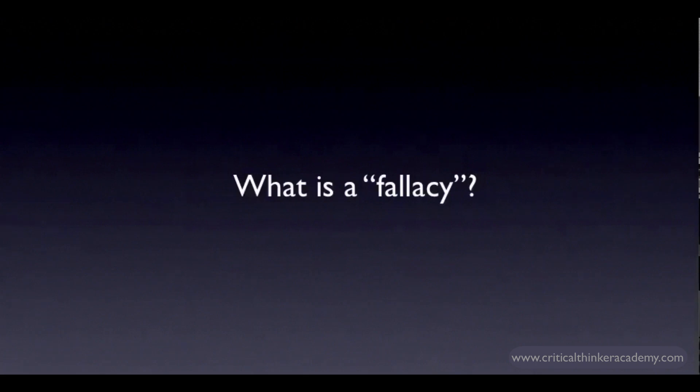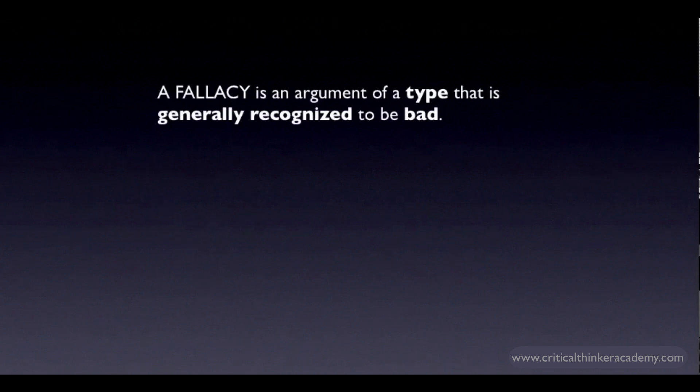In this tutorial, we'll look at the basic definition of a fallacy. Here's a very general definition: a fallacy is an argument of a type that is generally recognized to be bad. First and foremost, a fallacy is a bad argument. But not every bad argument should be labeled a fallacy. What makes it a fallacy is that the argument has certain general features that allow you to characterize it as a type, and it is these general features that are responsible for the argument being bad.